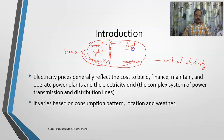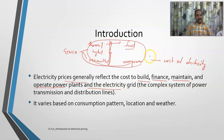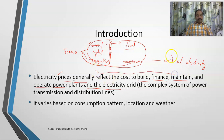The building of these plants, the fuel, the maintenance, and the manpower — particularly the operation — are all reflected in electricity prices. Prices generally reflect the cost to build, finance, maintain, and operate power plants and the electricity grid. Electricity must also be transmitted from the generating station to the customer, requiring transmission lines maintained by the transmission grid, which also adds to the cost.